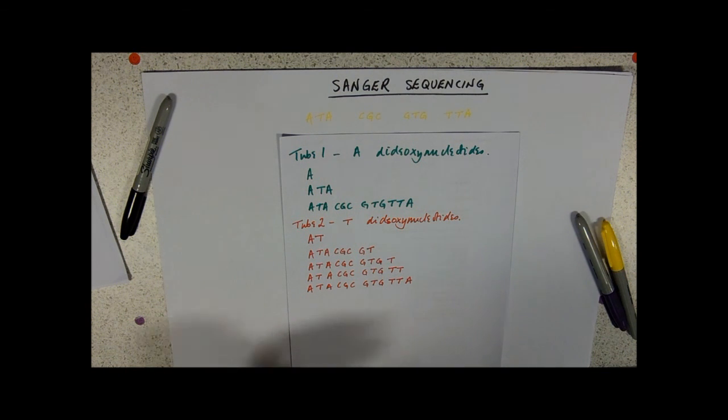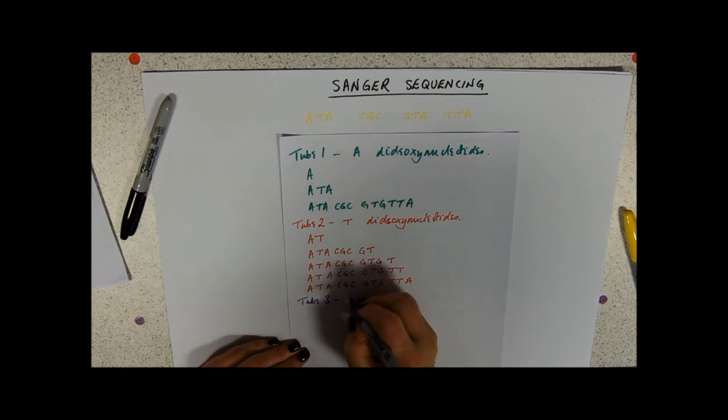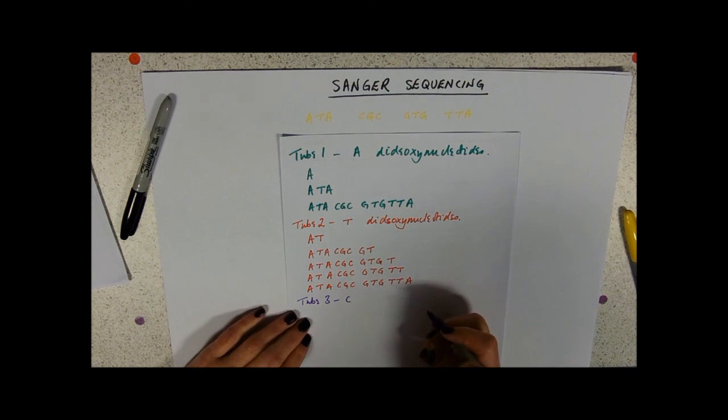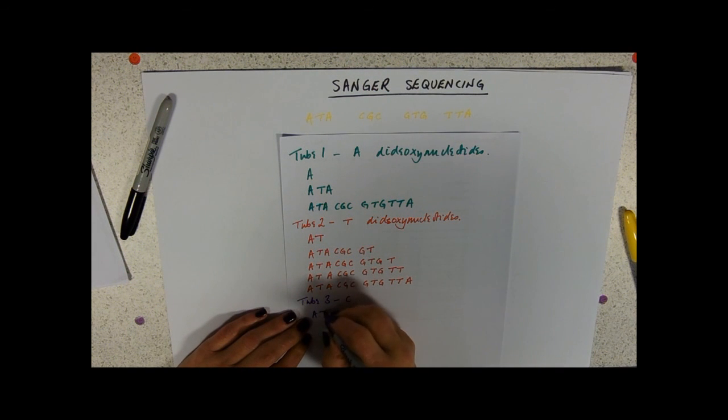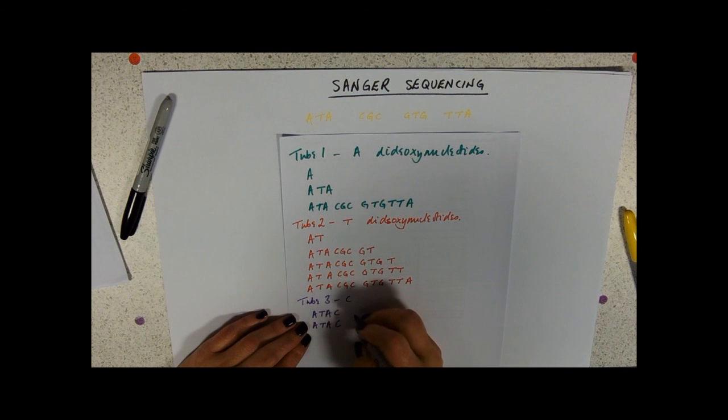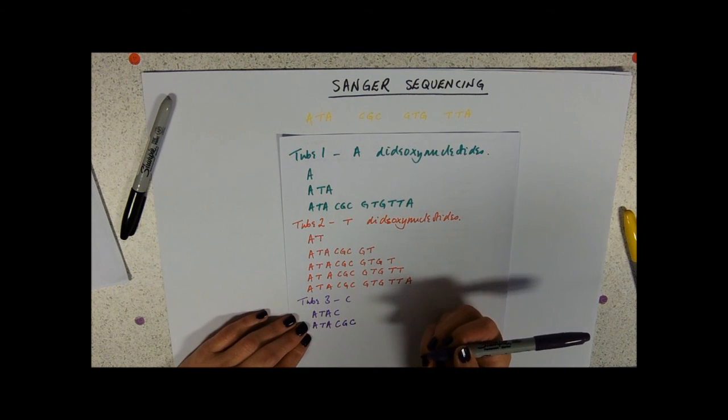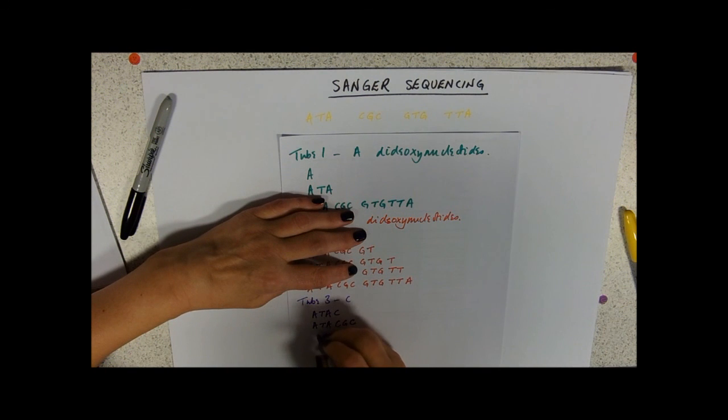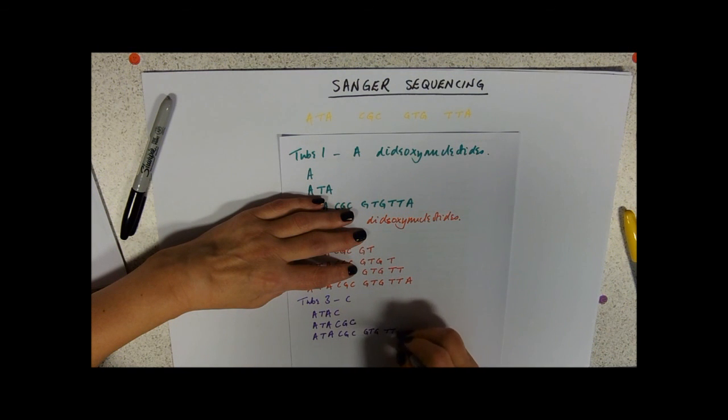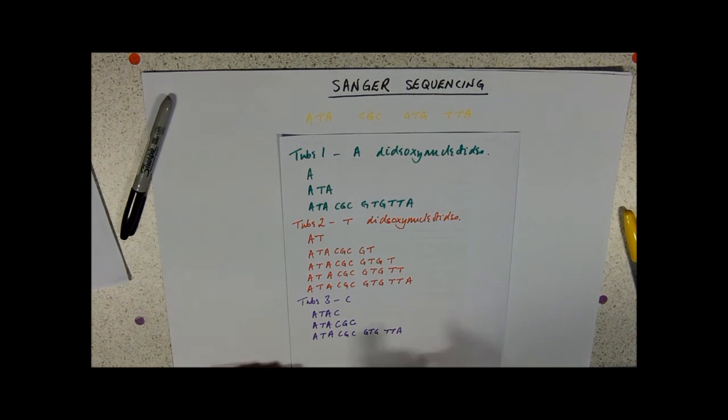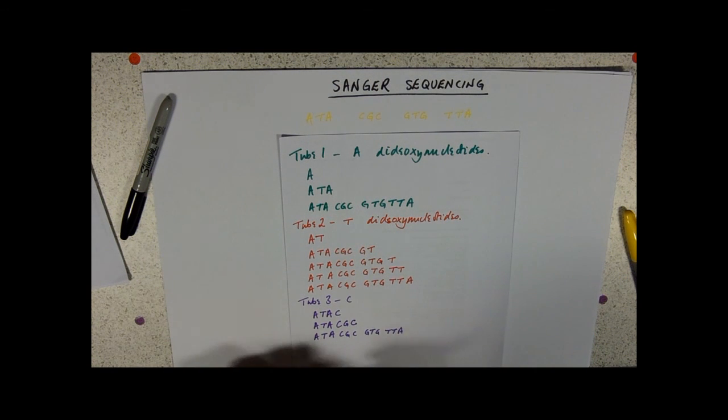So I think you're probably starting to get the picture now. So in tube three, I'm going to put my C's. So A T, A's are all normal, and I'll get a C. The nucleotides, the G's, the T's, and the A's, they're all absolutely fine, they're not the dideoxynucleotides, so it won't stop.